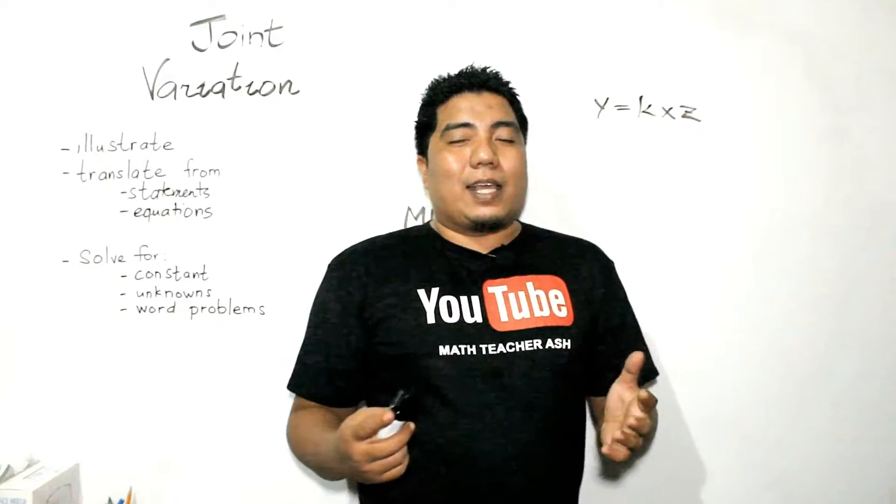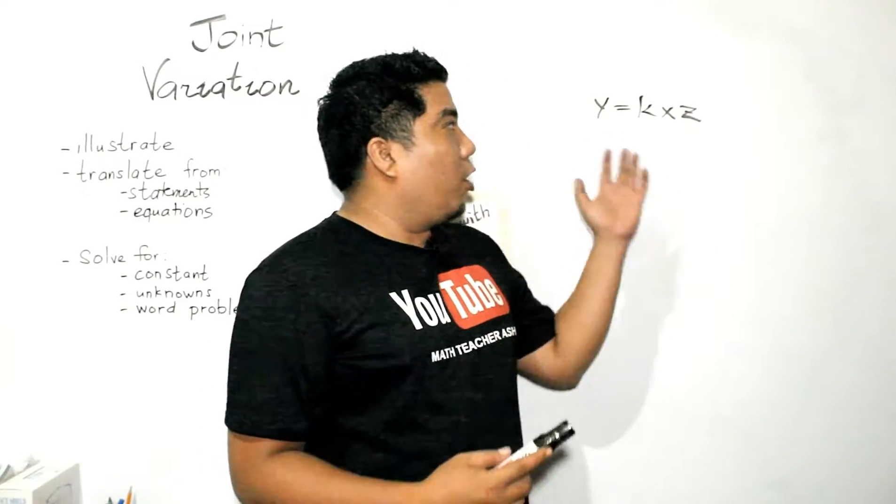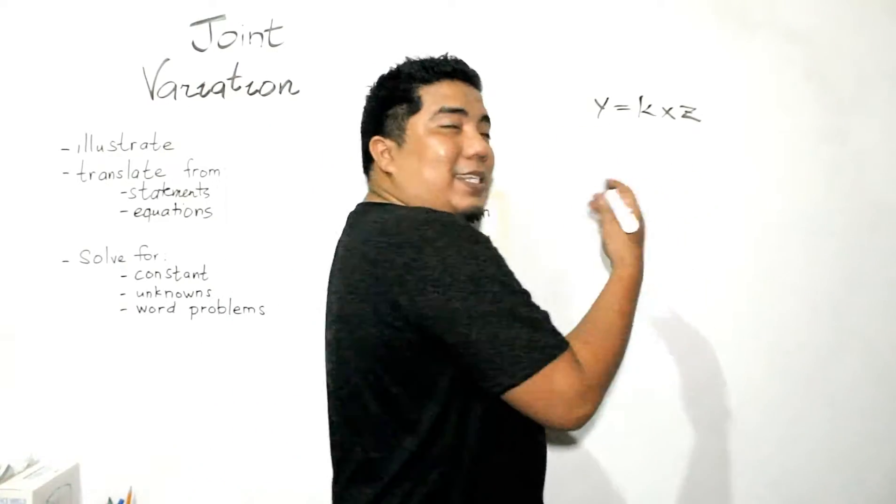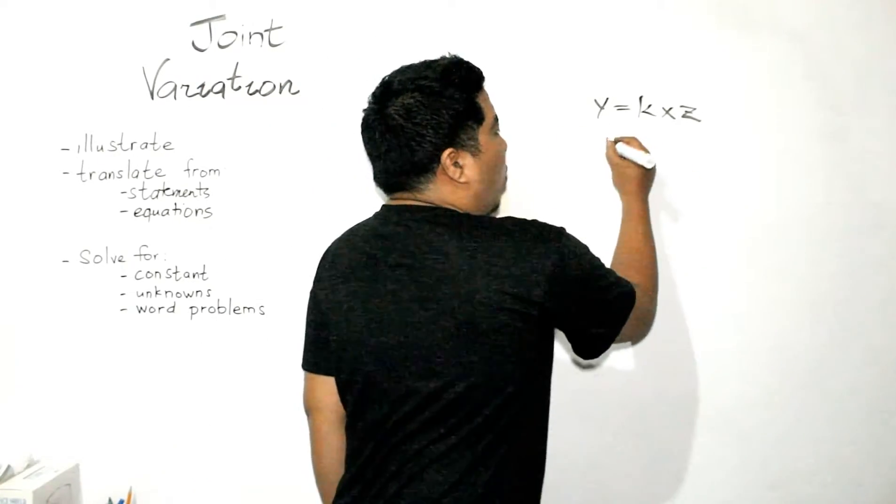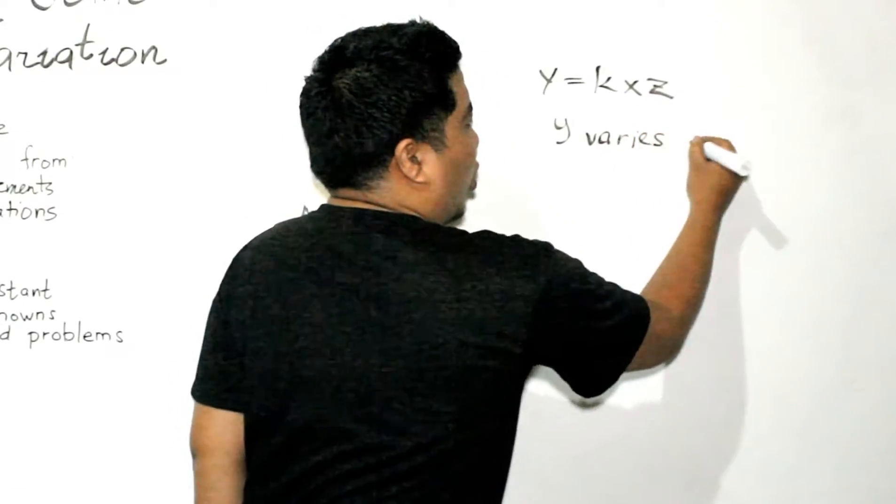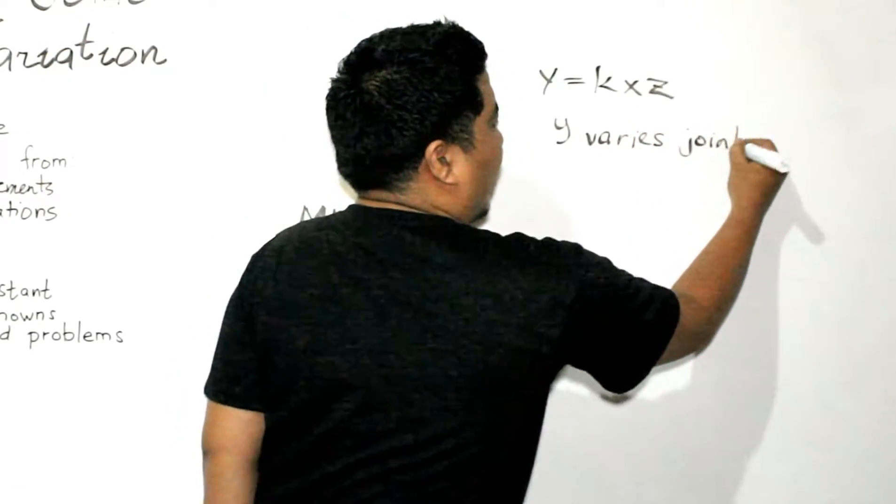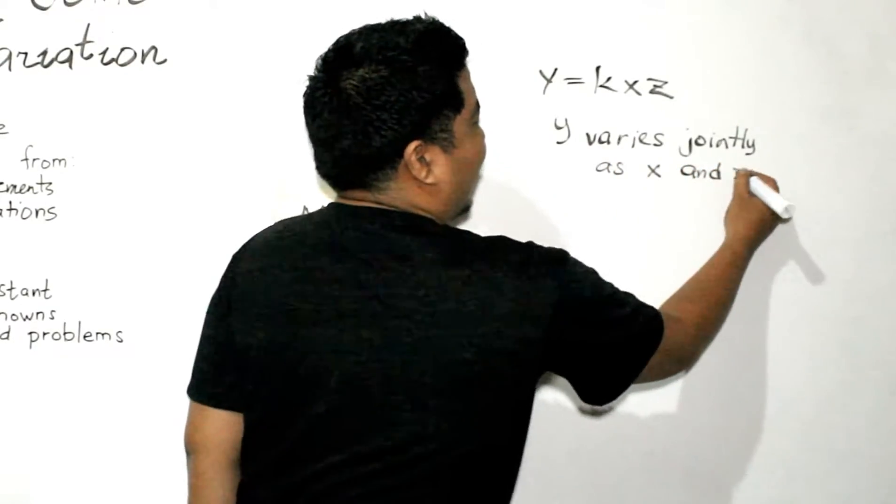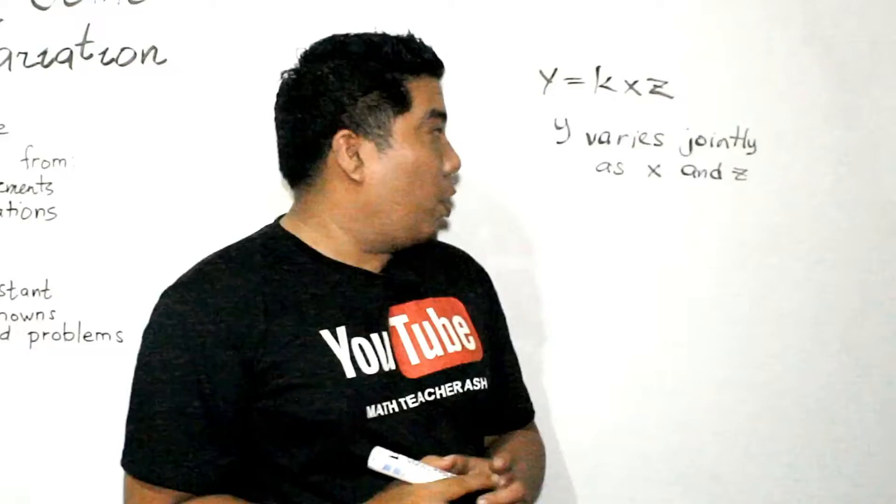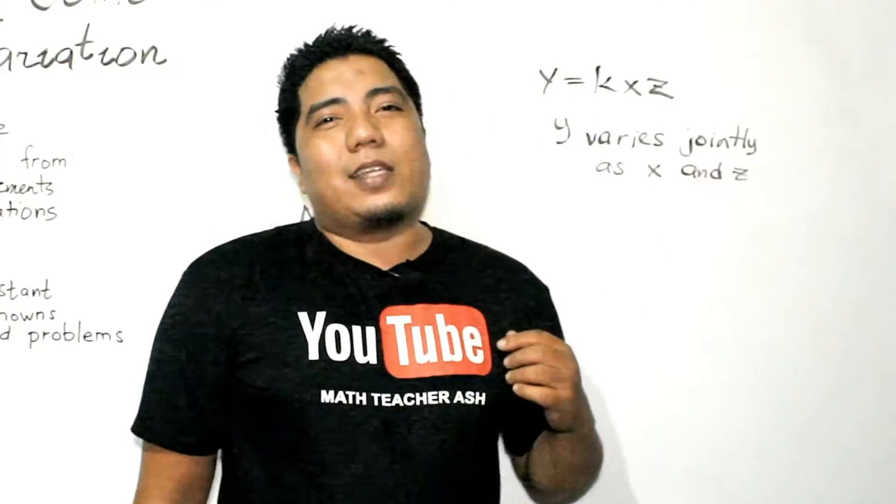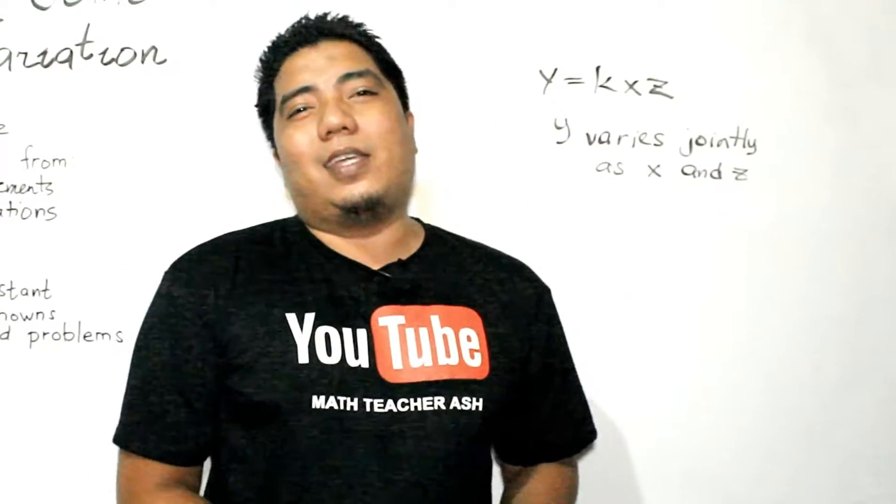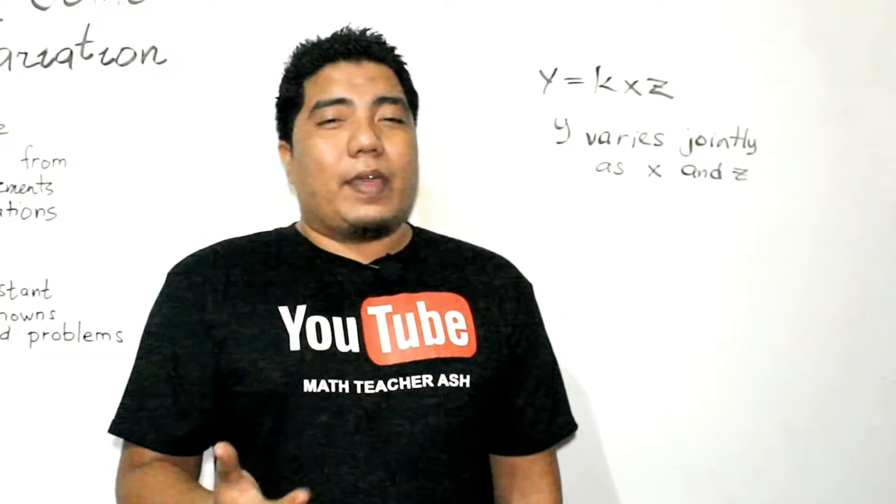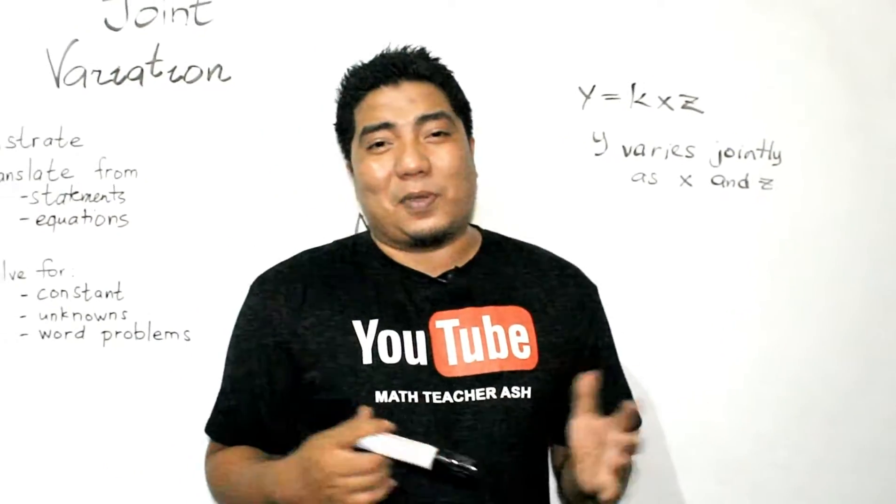So, this is basically the mathematical statement or equation of a joint variation. And this is read as, or this is translated as, y varies jointly as x and z. So, basically, when your x increases, your y increases. When your z increases, your y increases. Or vice versa, when your x or z decreases, then your y also decreases.